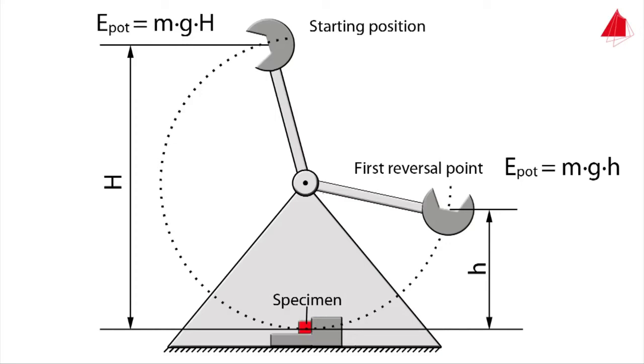The energy that has been absorbed by the specimen is called notch impact energy KV. It corresponds to the difference between the two potential energies.